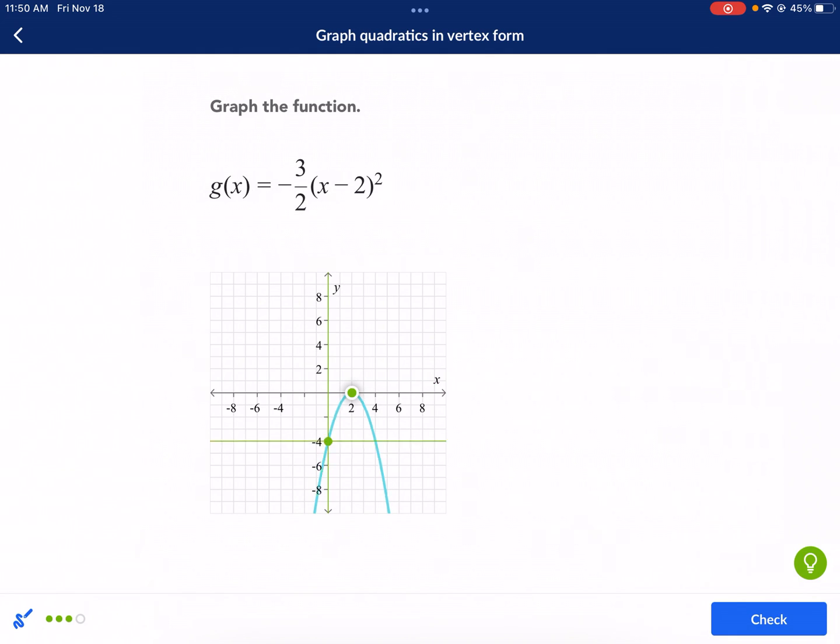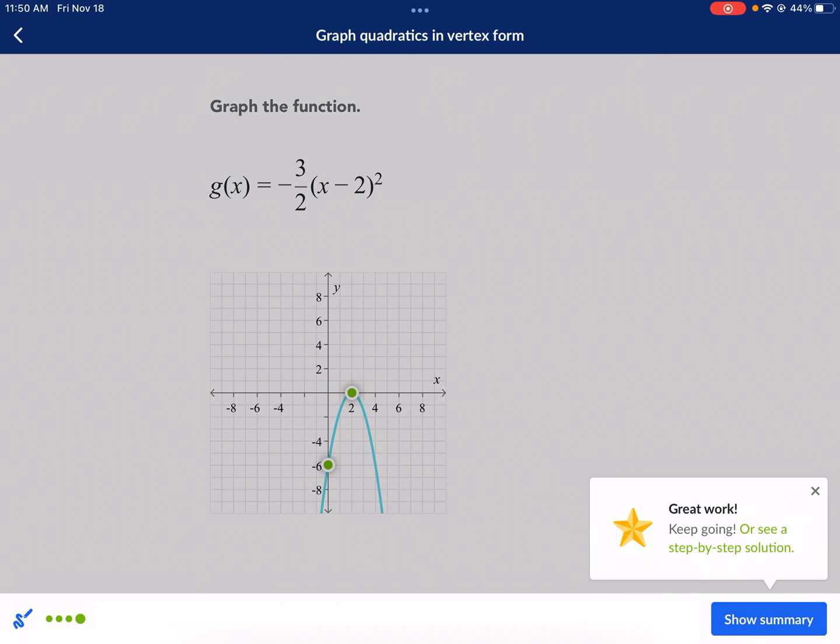Great. So I'm going to go down here to negative 6. There is my Y intercept. That's my vertex. Should be all set. And we're done.